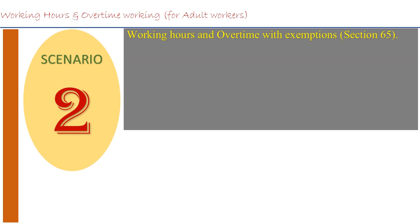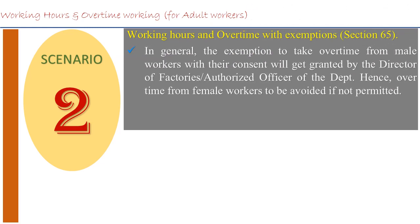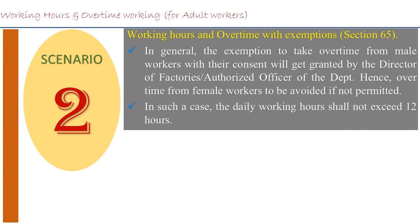As per Section 65, the exemption to take overtime from male workers with their consent normally gets granted by the Director of Factories or the authorized officer of the department. However, overtime work from female workers is to be avoided if not expressly permitted in the order of overtime exemption. There is also an outer ceiling available as per this provision.